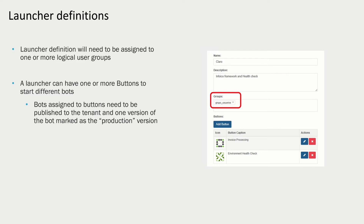There can be more than one group assigned, and that determines the users who can make use of the launcher. As part of the launcher definition we can create buttons, which are assigned to specific automation scripts or bots. In order to assign bots to launcher buttons, those bots need to be published to the tenant so we can select them from the list. One of the versions of the bot also needs to be marked as the production version — that being the version that will be triggered whenever the user uses the launcher.